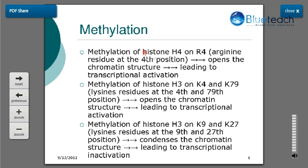Methylation of histone H4 at the arginine residue at position 4 opens up the chromatin structure, leading to transcriptional activation. Similarly, methylation of histone H3 on lysine residues at positions 4 and 79 opens up the chromatin structure and again leads to transcriptional activation. Whereas when histone H3 is methylated on its lysine residues at positions 9 and 27, it leads to condensation of the chromatin structure, making it less susceptible to RNA polymerases, and this leads to transcriptional inactivation.